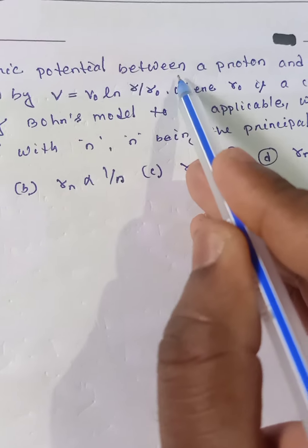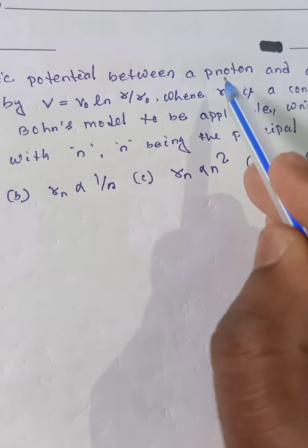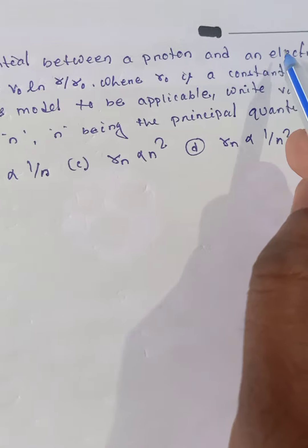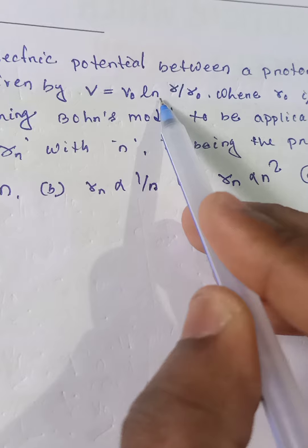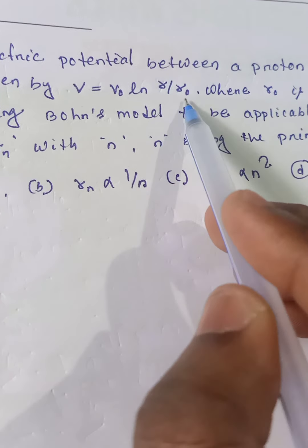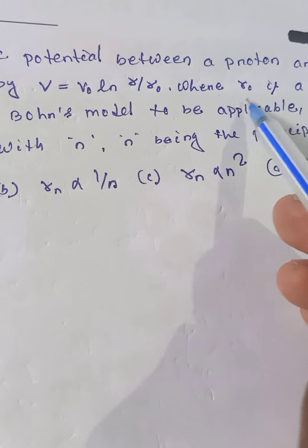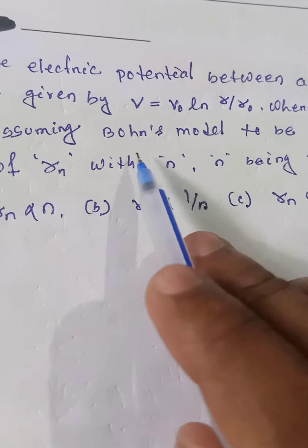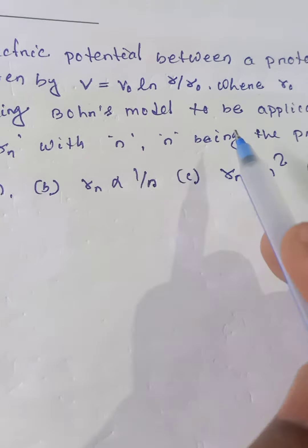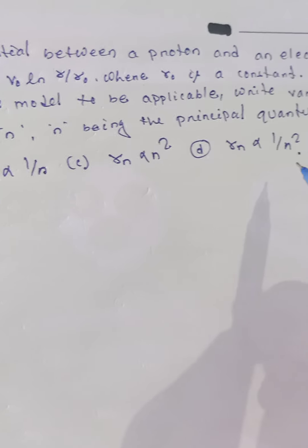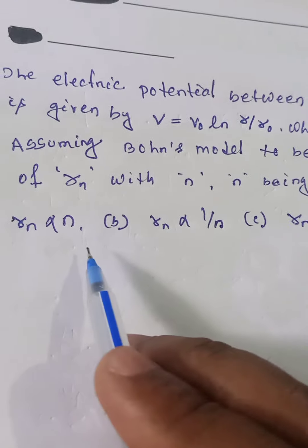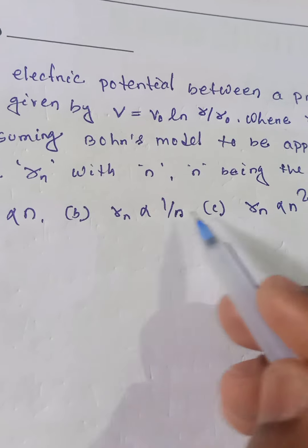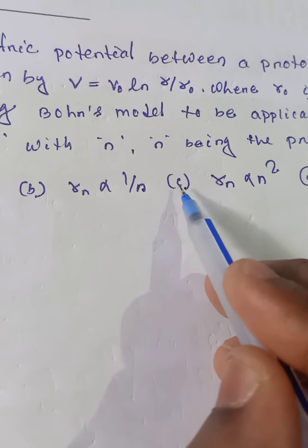The electric potential between a proton and electron is given by V = V₀ ln(R/R₀), where R₀ is a constant. Assuming the Bohr model to be applicable, write the variation of Rn with n, n being the principal quantum number.